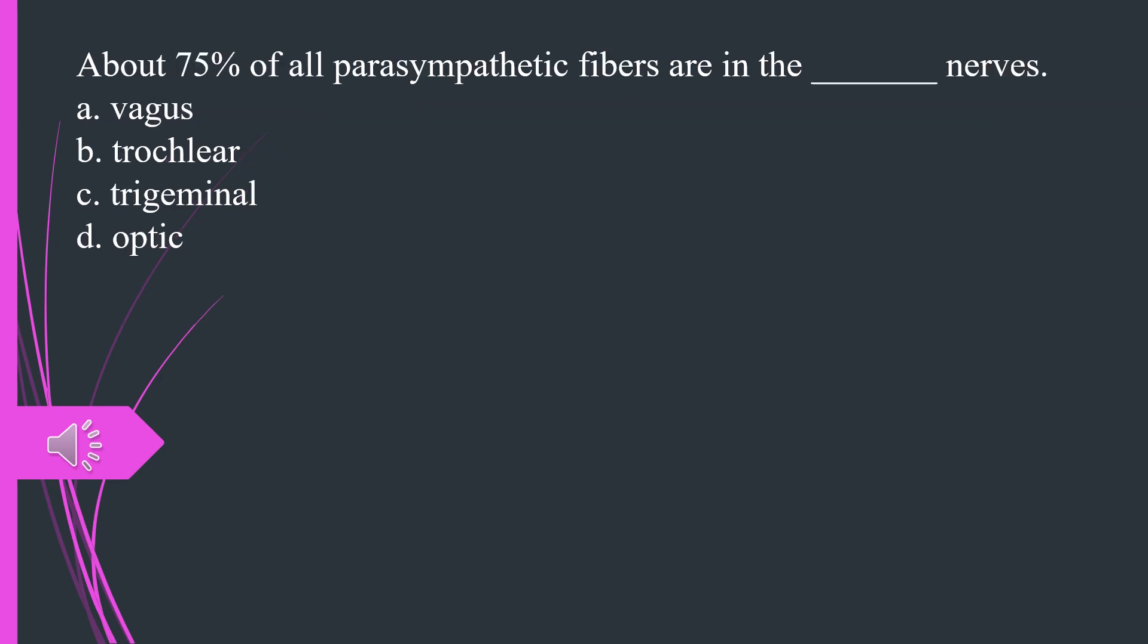About 75% of all parasympathetic fibers are in the what nerves. A. Vagus B. Trochlear C. Trigeminal D. Optic. The answer is A, vagus.